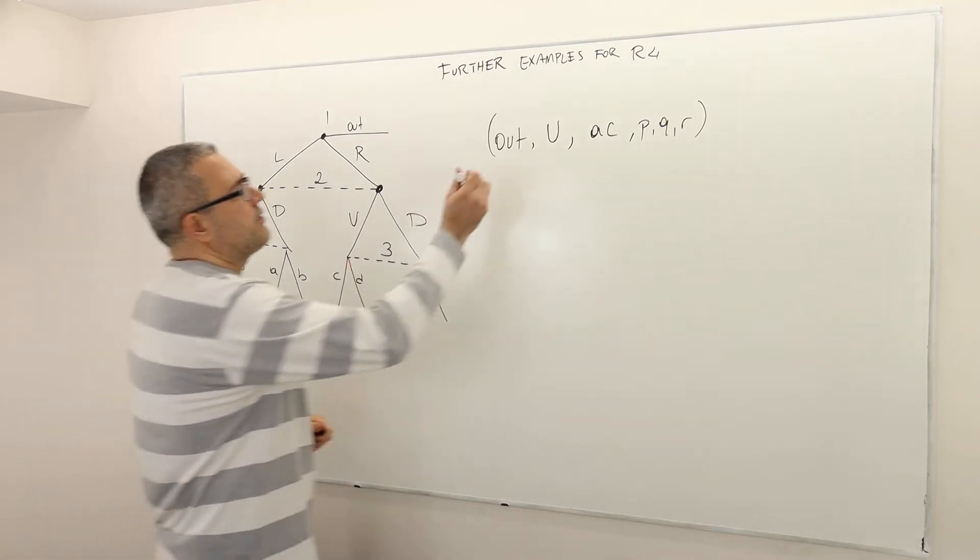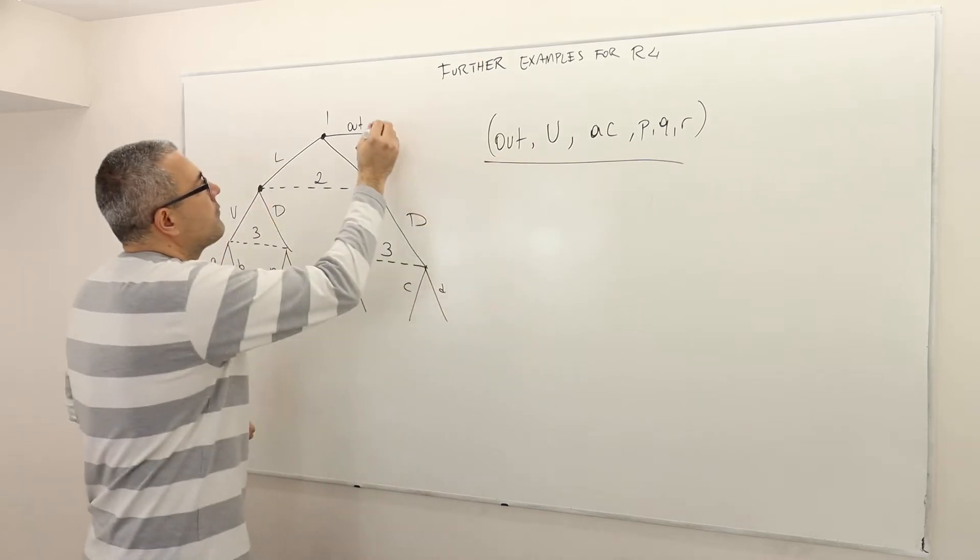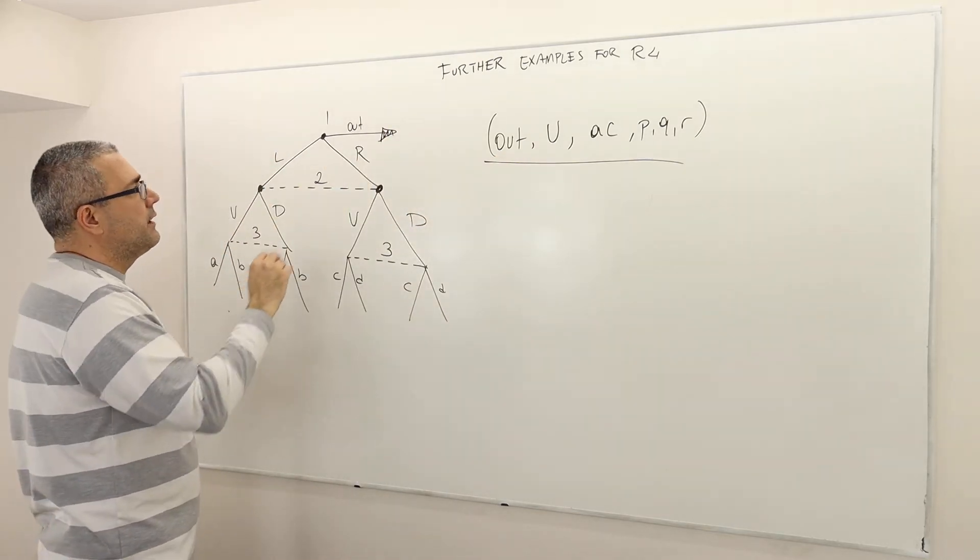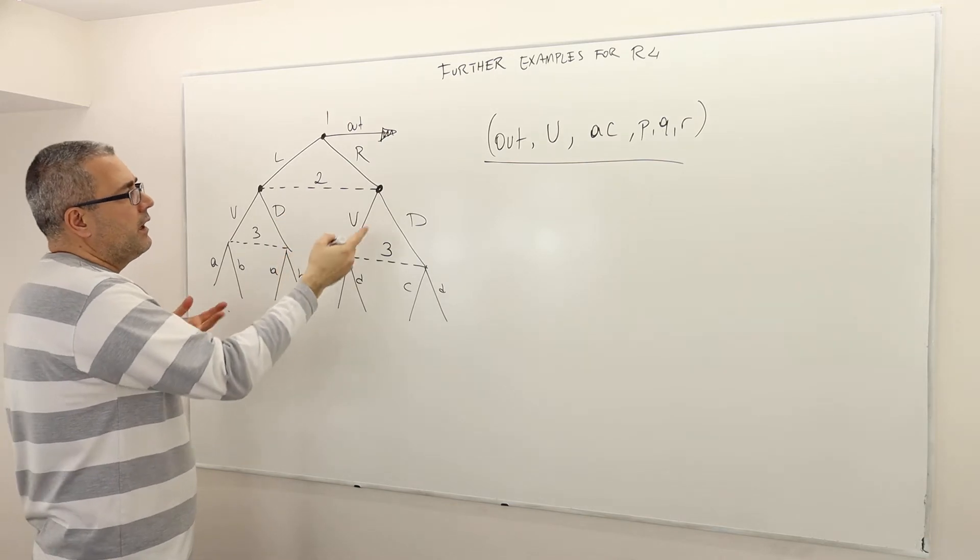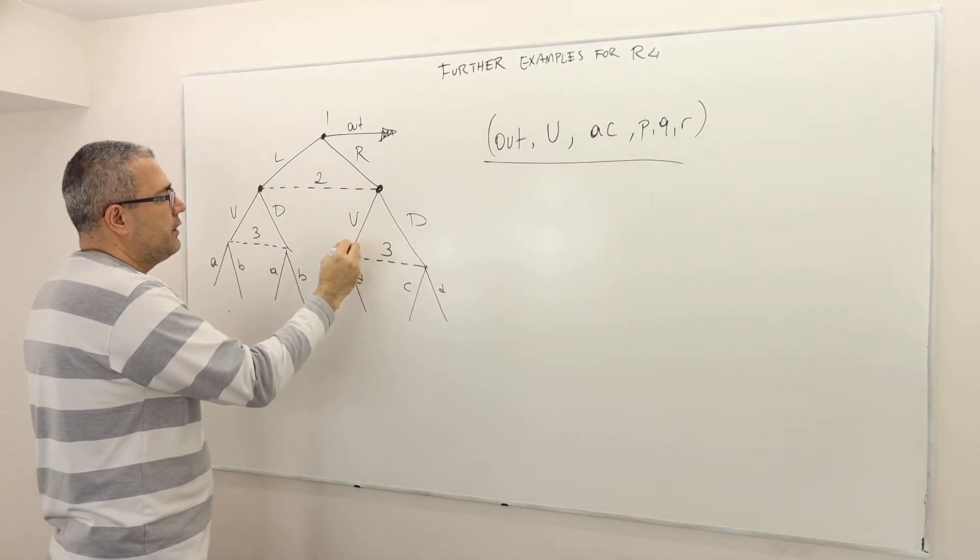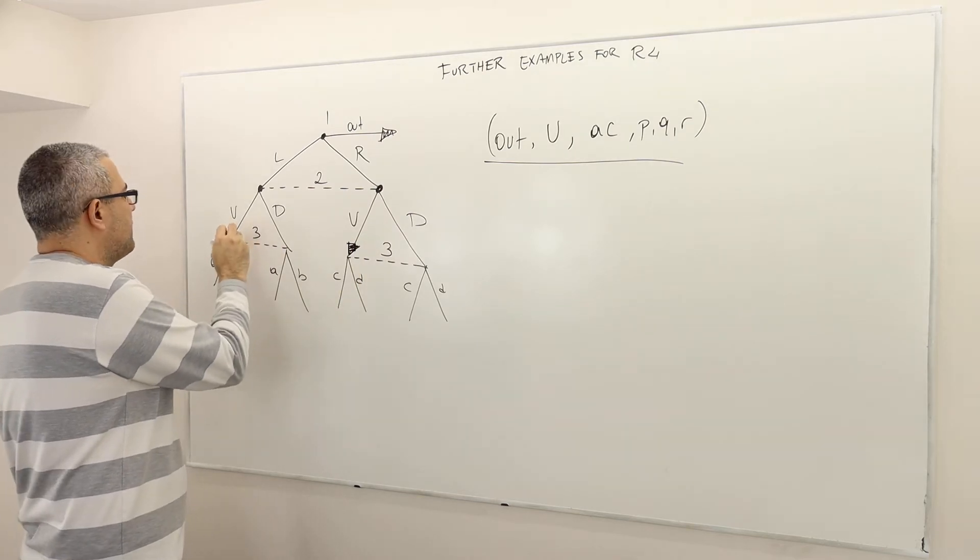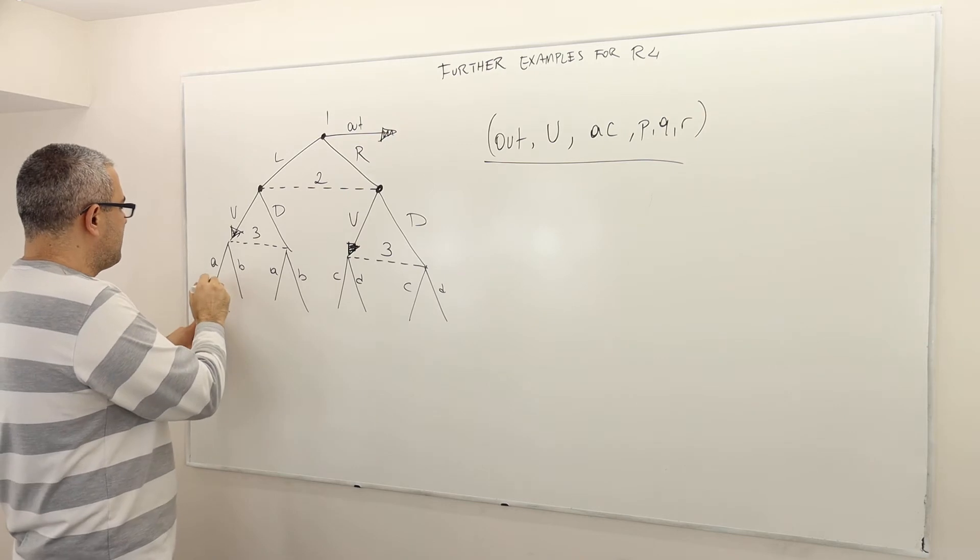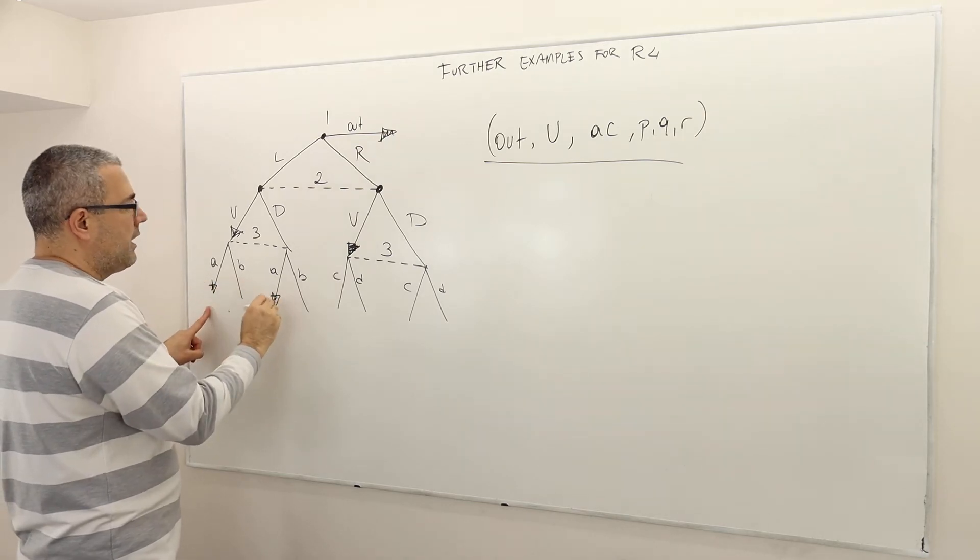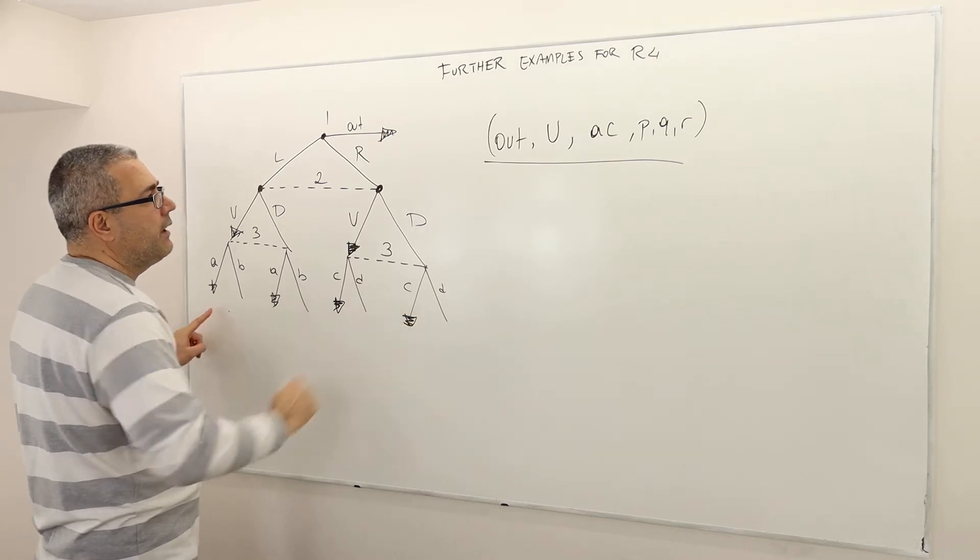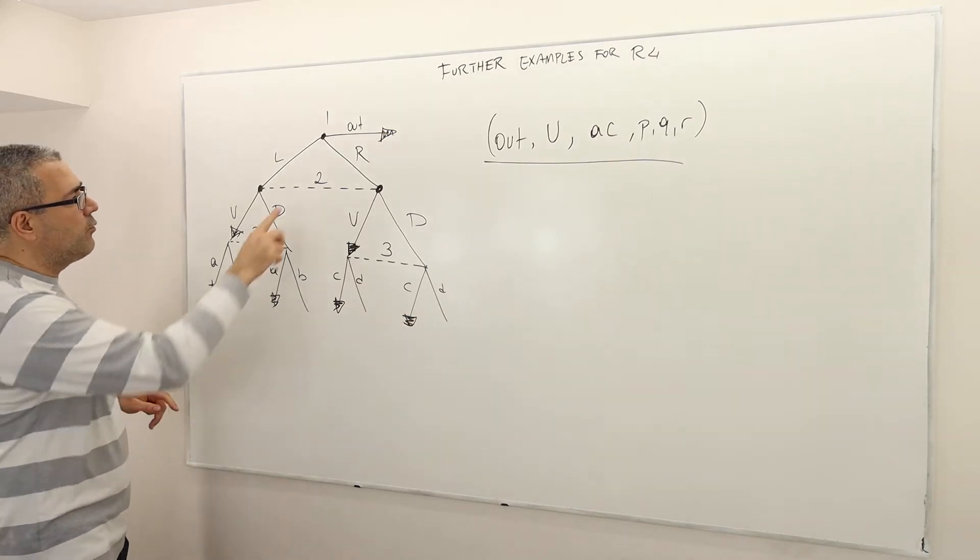Let's look at this strategy profile. Out, player 1 finishes the game. However, if for some reason he deviates, player 2 is going to play U here and U here. Obviously he can't distinguish. And then player 3 is going to play A here and C here. Here I have 1, 2, 3 non-singleton information sets.